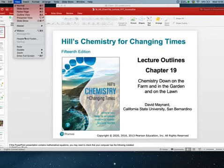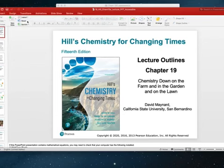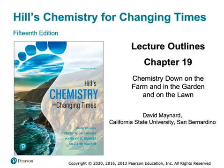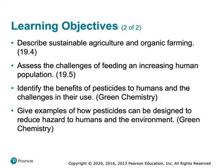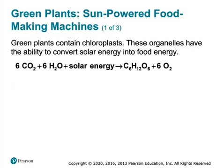Getting towards the home stretch here. We're at chapter 19 — we're going to talk about food and how we grow crops. Here are the learning objectives.